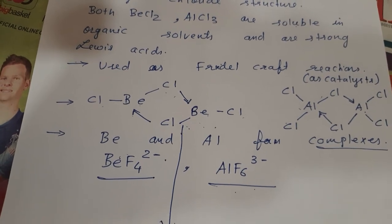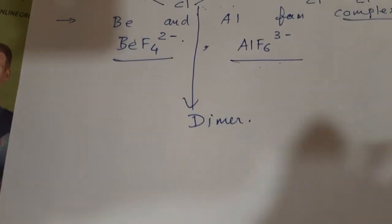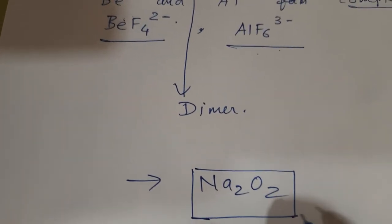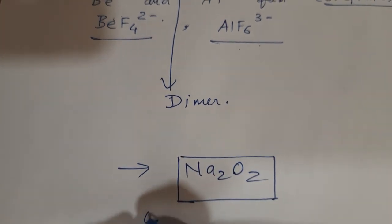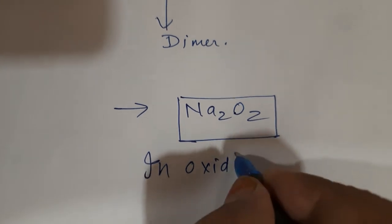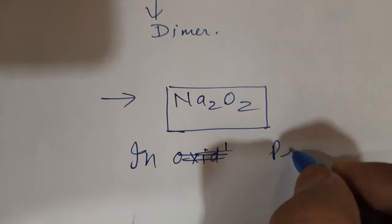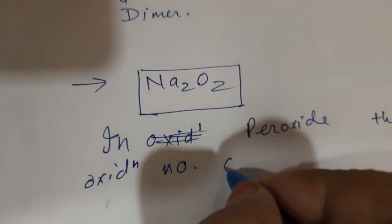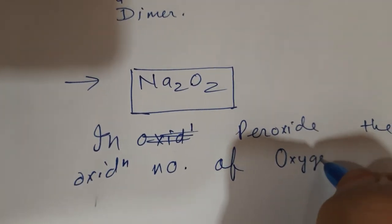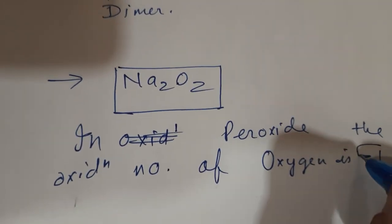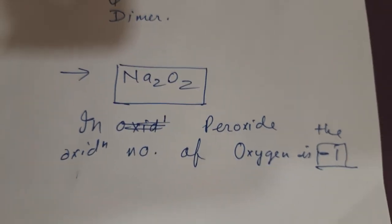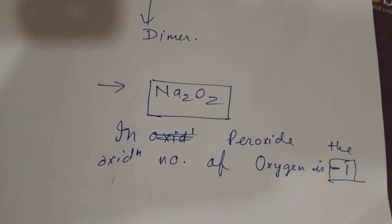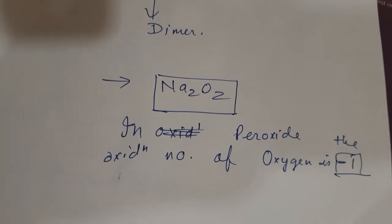For example, a question: find the oxidation number of sodium in Na₂O₂. Whenever you find Na₂O₂, remember this is a peroxide. In a peroxide, the oxidation number of oxygen is −1, not the usual −2. Keep these things in mind when finding the oxidation state.